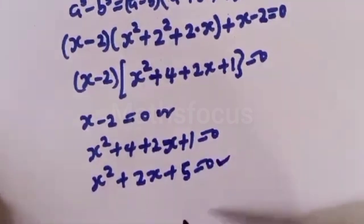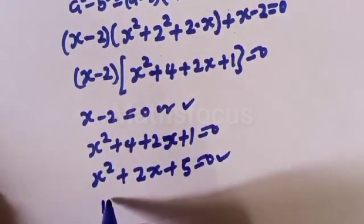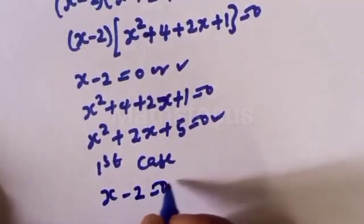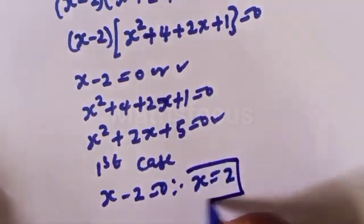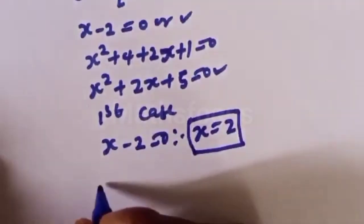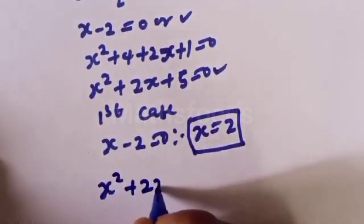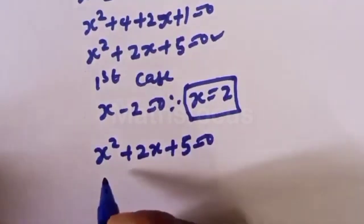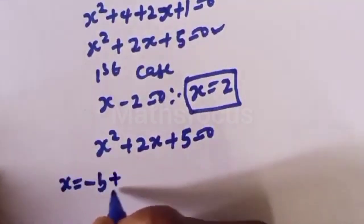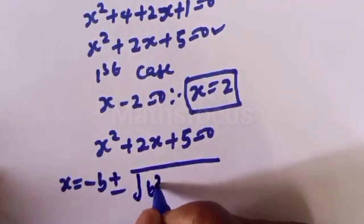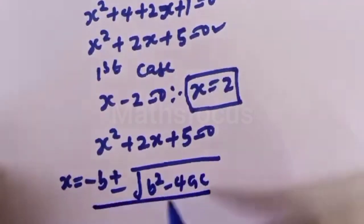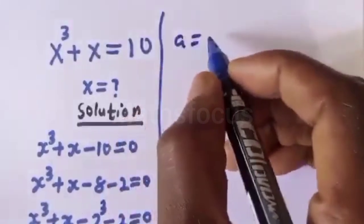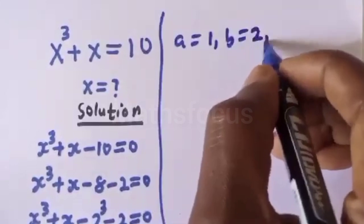From the first case: s minus 2 equal to zero, therefore s is equal to 2. From the second case, s squared plus 2s plus 5 equal to zero. Let's solve this using the quadratic general formula: s equals minus b plus or minus square root of b squared minus 4ac over 2a, where a equals 1, b equals 2, and c equals 5.